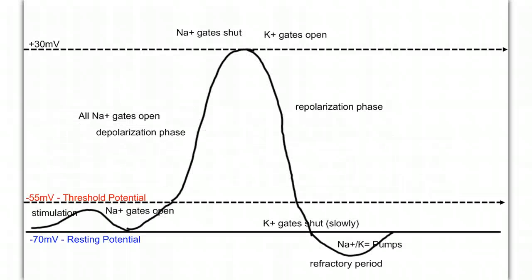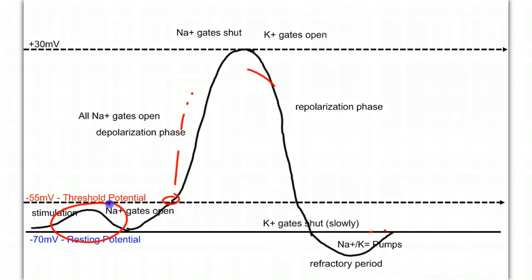The action potential is described as an all or nothing event, meaning you can't have a small action potential, or a slow one, or a hard one or a faster one. It is very much like the analogy of shooting a gun — when you pull that trigger, if you pull a little bit, you might not fire the gun. But if you reach a certain amount of pressure, that gun's going to fire, and once you fire it, you can't unfire it. It's going to go from beginning to end to completion. That's how action potentials are — they're all or nothing events. You either have one or you don't. You can't have a strong one one time and a weak one another time. It's always the same.